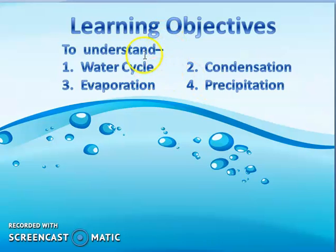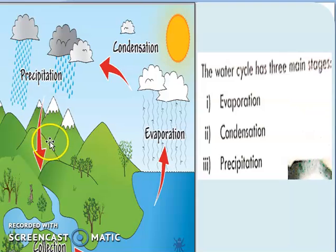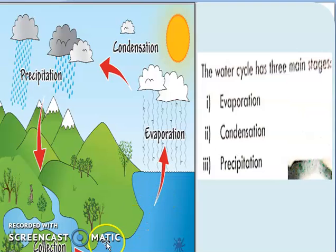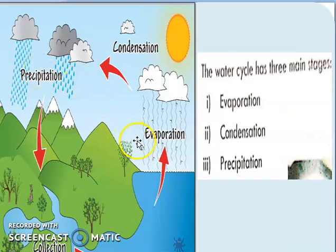Let's begin with the water cycle. Look at the picture — this is the picture of the water cycle, which you can also see in your book. The blue color represents water. Water is collected, then due to sun's heat the water gets heated and evaporates. After rising to a height it condenses, and when it becomes heavier, precipitation occurs. These are the three major stages of the water cycle.